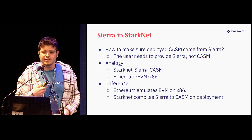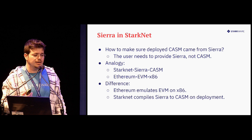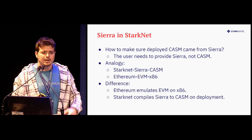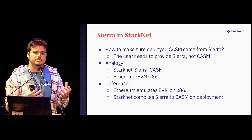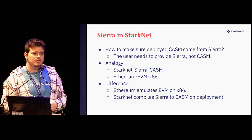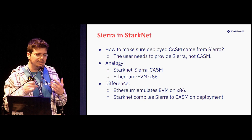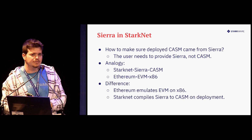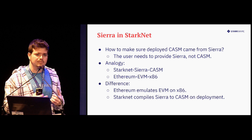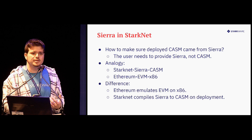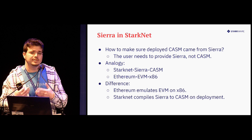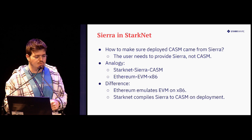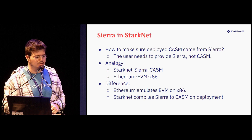The analogy I like to think about is that Sierra to StarkNet is like EVM to Ethereum. It's an intermediate representation and instruction set that forms the semantics of this blockchain. In Ethereum, the semantics are running EVM. In StarkNet, the semantics are now running Sierra. And everything else is just an implementation of this. In Ethereum we simulate EVM; in StarkNet we compile Sierra to Casm one time when deploying.